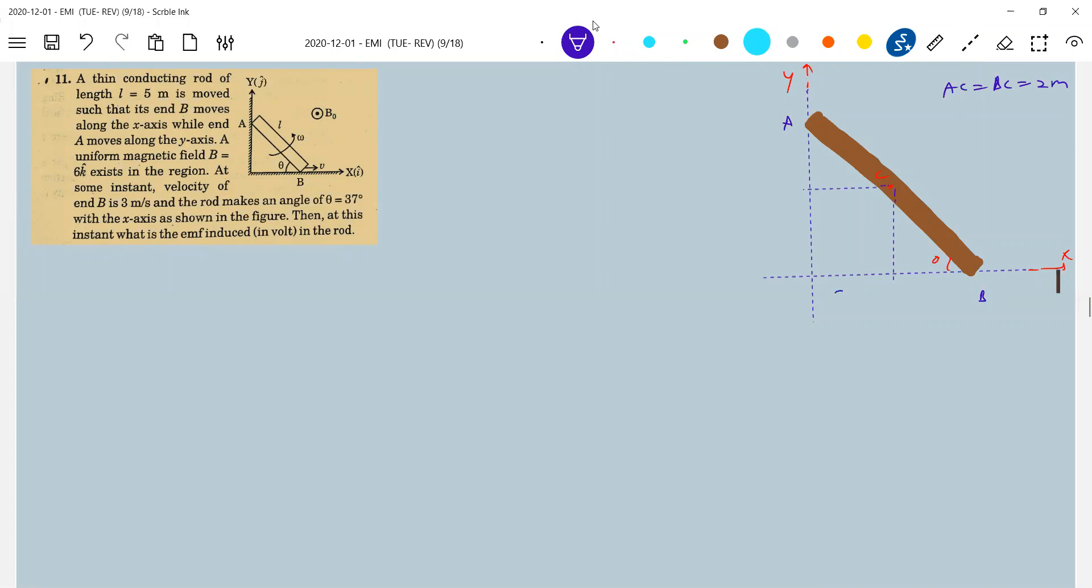So this distance will be 2 cos theta. Shall we assume, because this AB is this particular length, so 2 cos theta is this length.